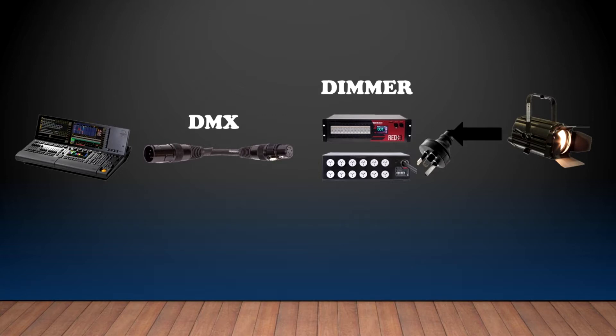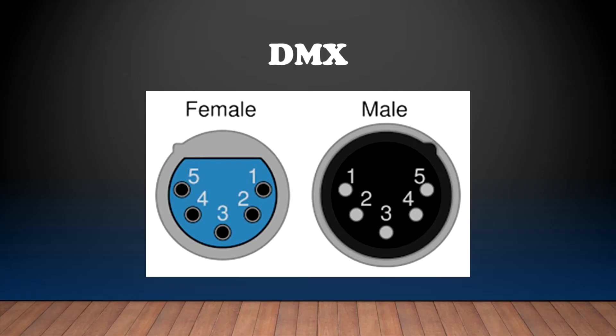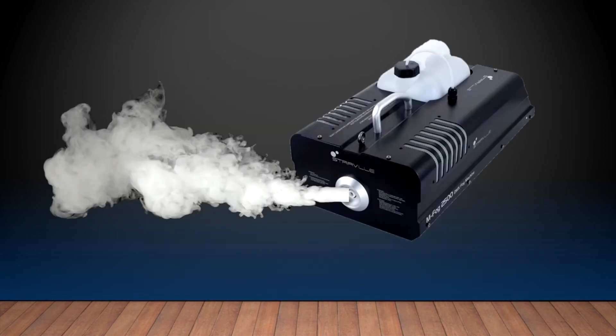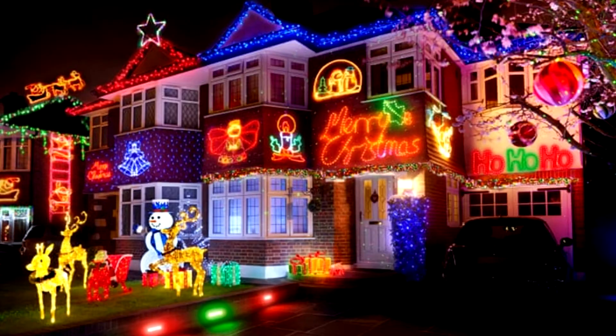And from the dimmer, we will plug in our light. Now, what is this DMX we've been talking about? Well, that is just a protocol so we can control the lights. They can also control foggers, intelligent lights, and even some Christmas lights.